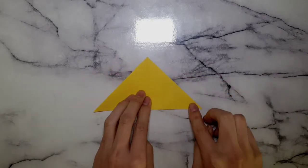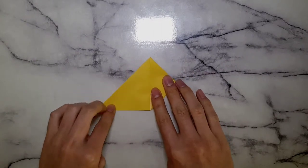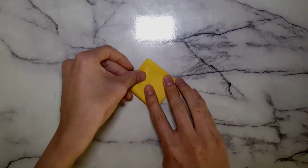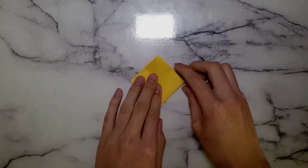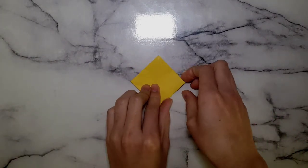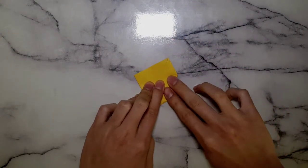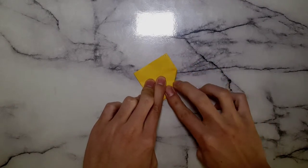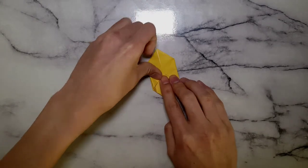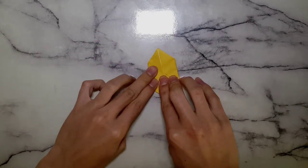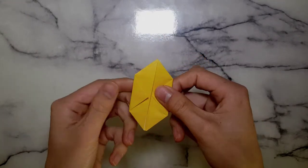Now we're going to flip the piece of paper and do the same with what we did on the other side. So bringing the two corners in and folding it to meet the top corner. Now we're going to bring in the sides like we did before, making sure it doesn't go past the middle.